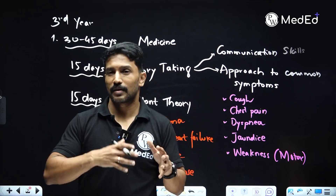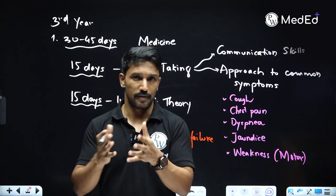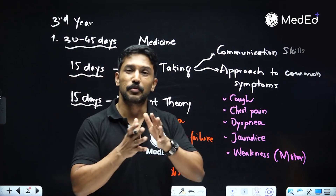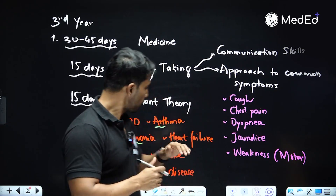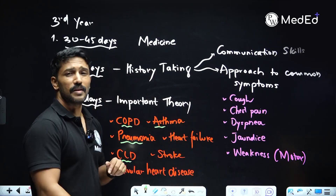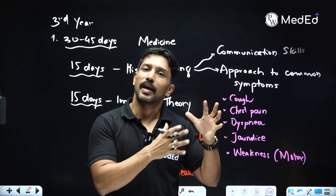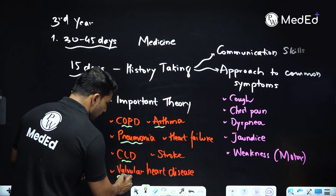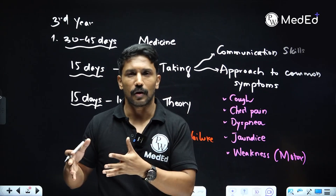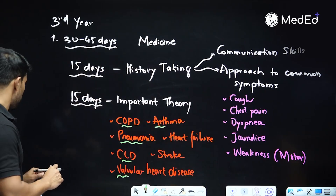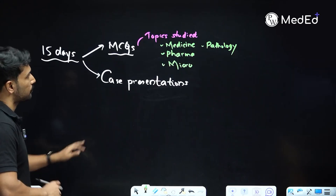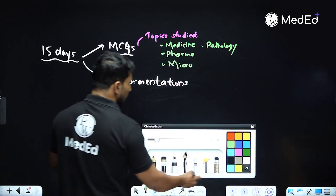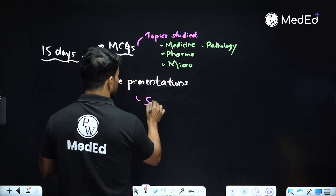For asthma, cover inhalers, inhaler techniques, short-acting and long-acting beta agonists, short-acting and long-acting anti-muscarinics, newer biologicals, and monoclonal antibodies. For COPD, cover new drug classes and treatment strategies per GOLD guidelines. For CLD, study albumin and hepatopathology — micronodular and macronodular cirrhosis. For valvular heart disease, you will be revising the whole cardiac physiology alongside. This way, medicine, pathology, and pharmacology core topics get revised simultaneously.